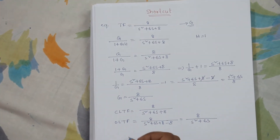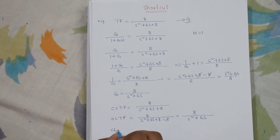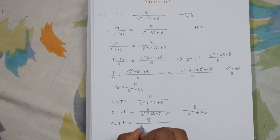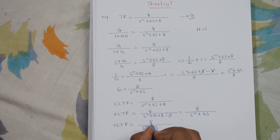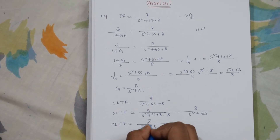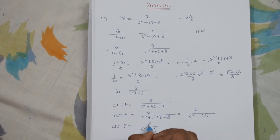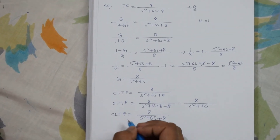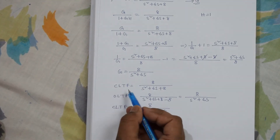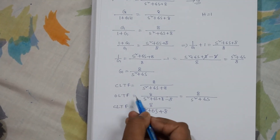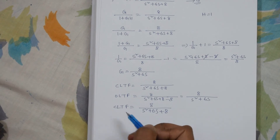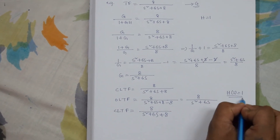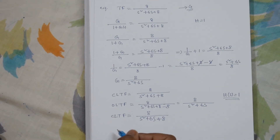Now, how to convert it into closed loop transfer function again? We write the open loop transfer function and whatever is in the numerator, we add it in the denominator. So now we know how to convert closed loop transfer function to open loop transfer function and vice versa, provided that the feedback factor H must be 1.